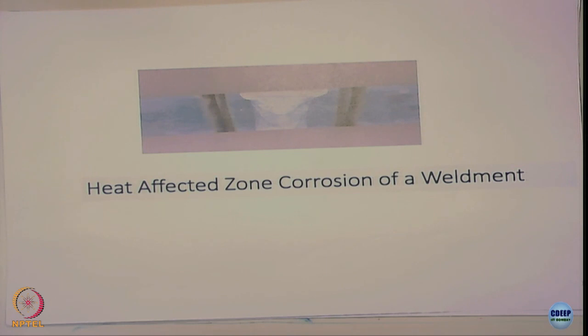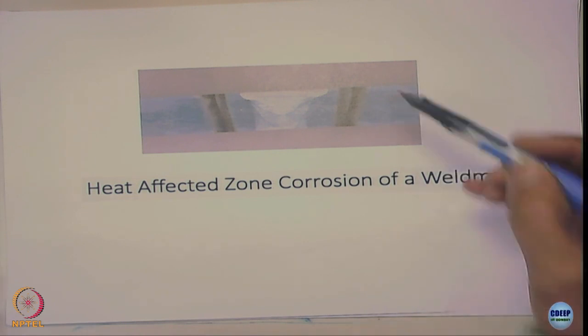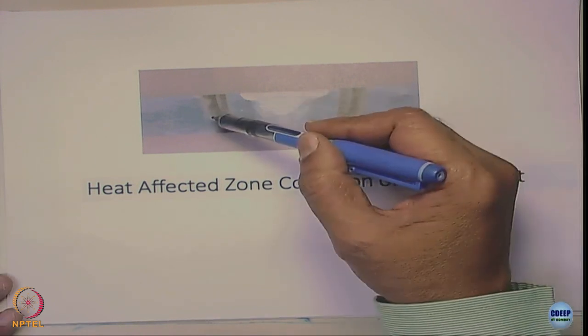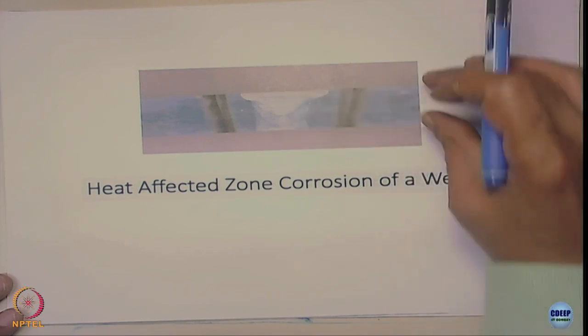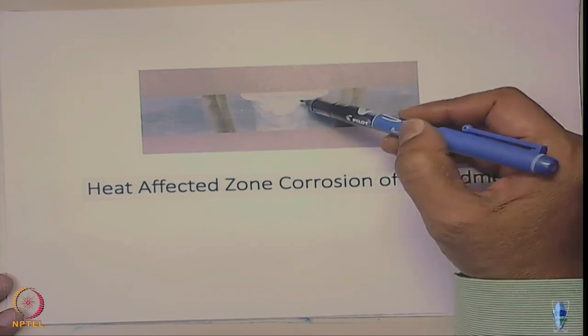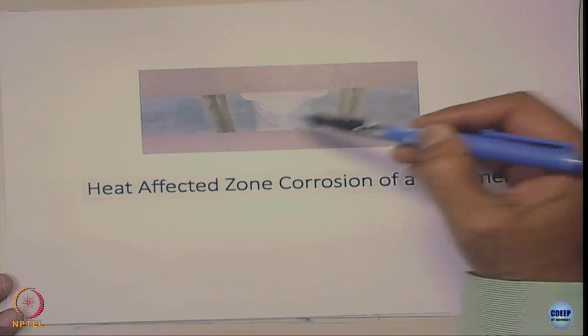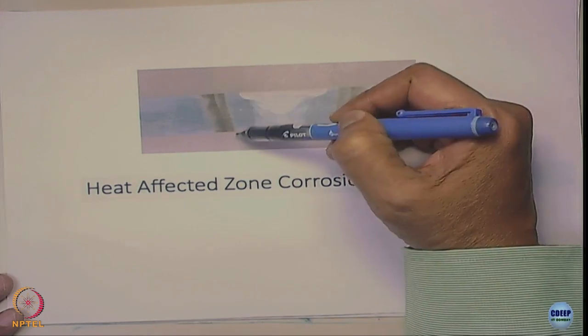To give an example of how weldments can cause selective corrosion: here is a macro photograph of a stainless steel welded and then exposed to a corrosive medium like sodium chloride solution. You can see that corrosion has occurred on both sides of the fusion zone. This is a cross section — the weld fusion zone and the heat affected zone are visible, and you see the corrosion occurs.